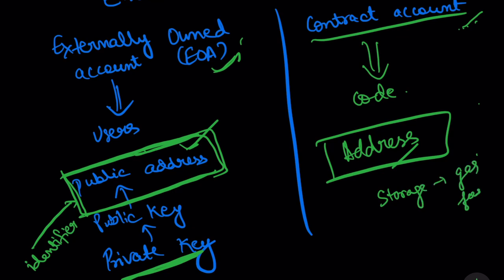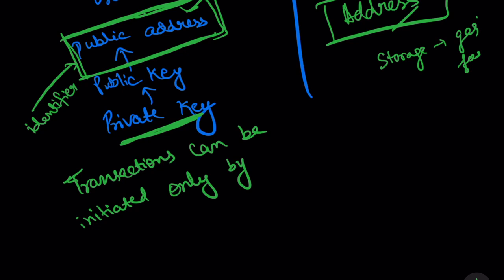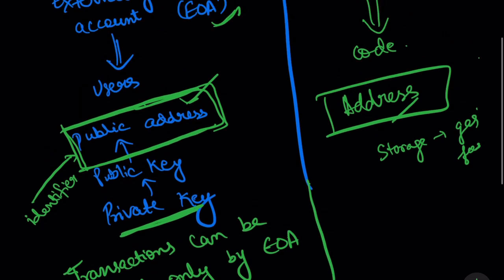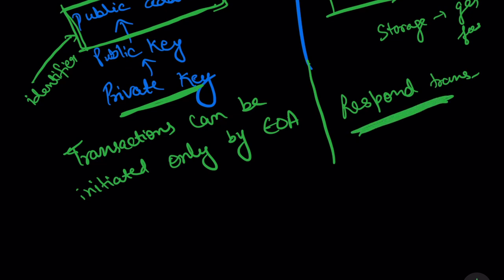The major difference between these two is that transactions can be initiated only by externally owned accounts. A contract account can never initiate any transaction, but it can respond to transactions by creating new transactions. Transactions are always initiated by externally owned accounts.